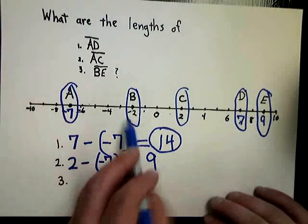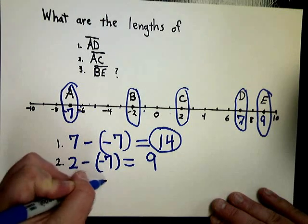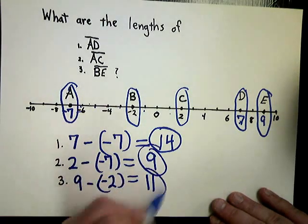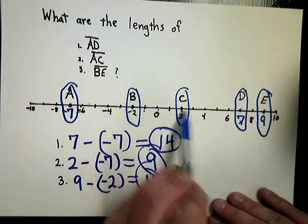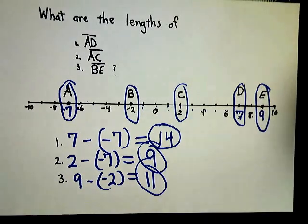And the last one, BE. Well, E is nine. B is negative two, so it's nine minus negative two. So that should give me eleven. And if I count it up, one, two, three, four, five, six, seven, eight, nine, ten, eleven. See, it's very simple. All you have to do is take the one that's furthest to the right and subtract the one that's furthest to the left.